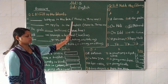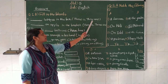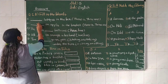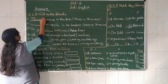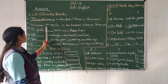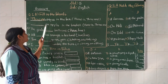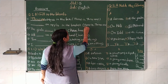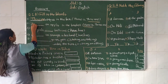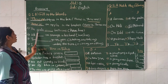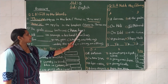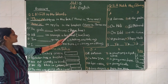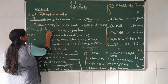ફર્સ્ટ, ખાલી જગ્યામાં આર્ટિકલ ભરો. આર્ટિકલ આવે ત્યારે 'a' અથવા 'an' આવે. Glasses, box - આ જગ્યાઓ ભરવાની છે. 'Have' અને 'had' નો ઉપયોગ ધ્યાનમાં રાખો.